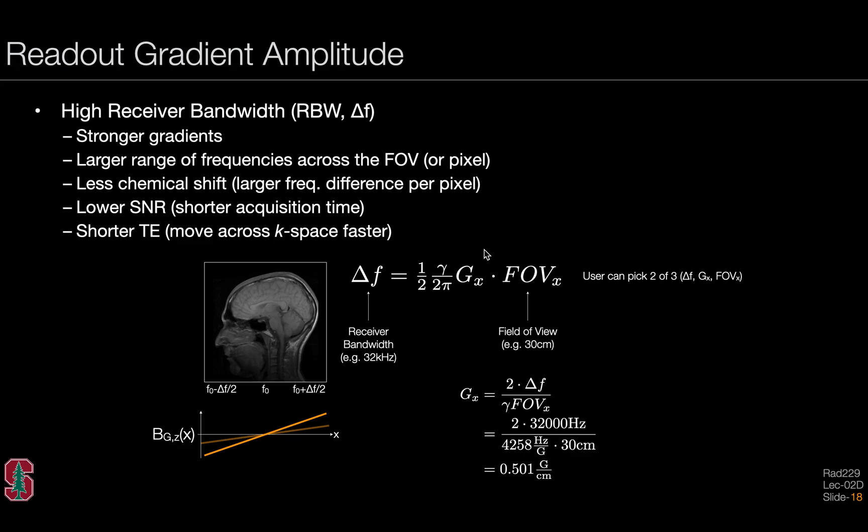This is done behind the scenes by the scanner. So we can rearrange this expression. And if we chose a field of view of 30 centimeters and we choose a receiver bandwidth of 32 kilohertz, then we see that we need to apply a half gauss per centimeter of gradient amplitude.